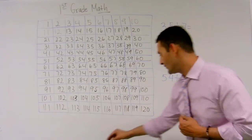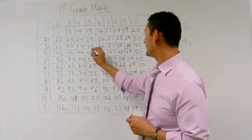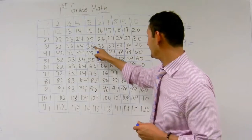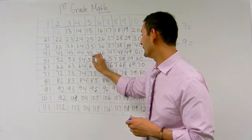Here we have 35 plus 7. So what I'm going to do is I'm going to start with 35 and I'm going to go down 10, which is 45 right here.